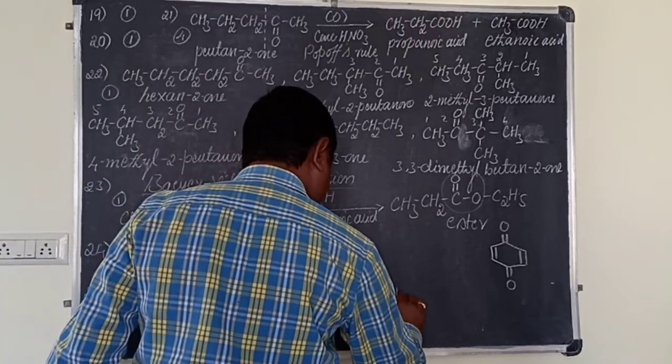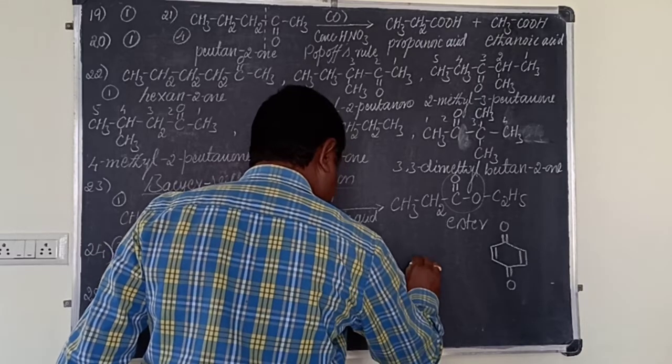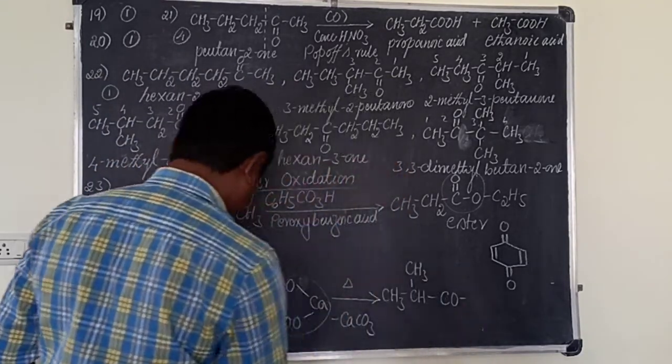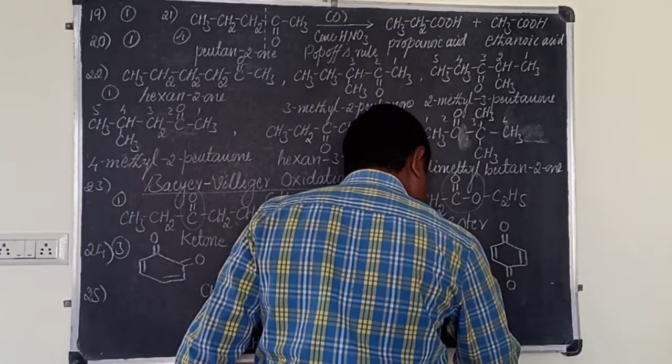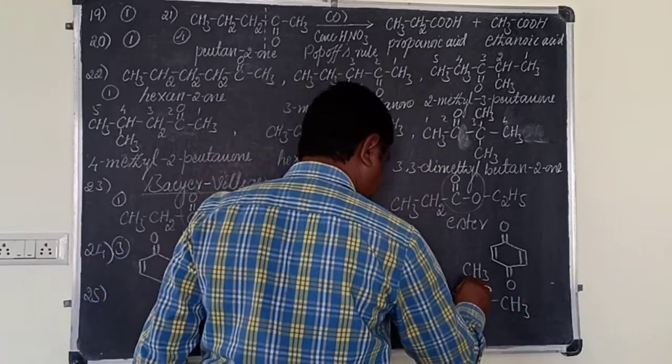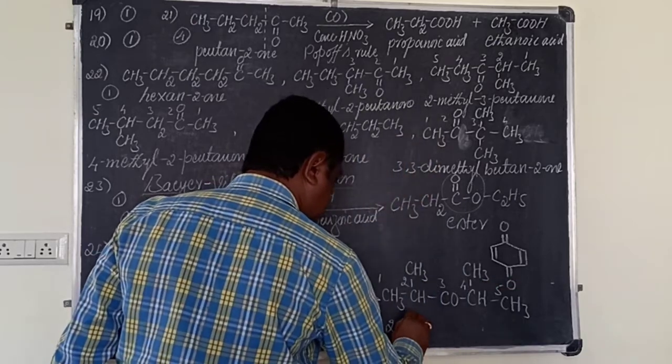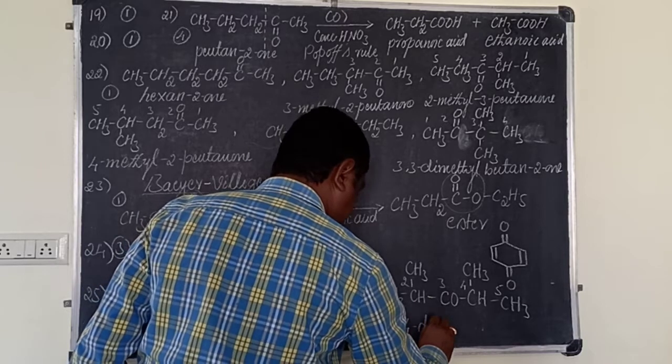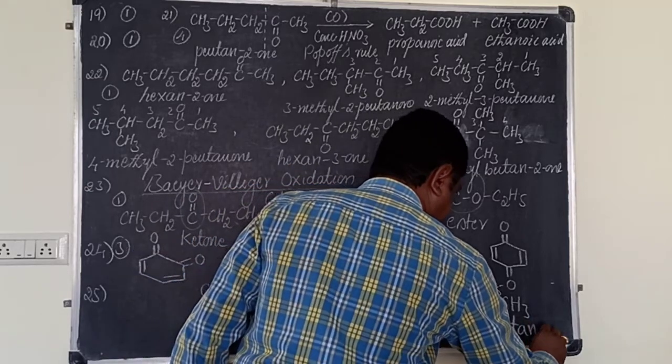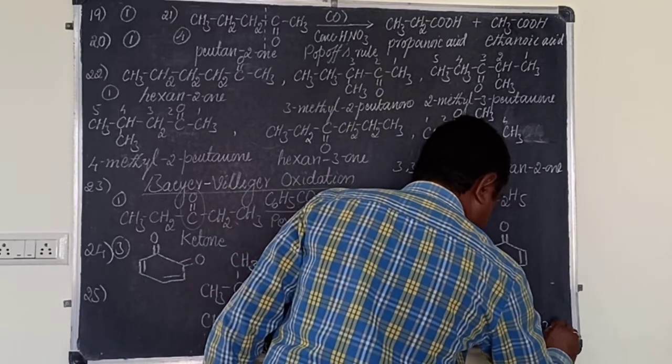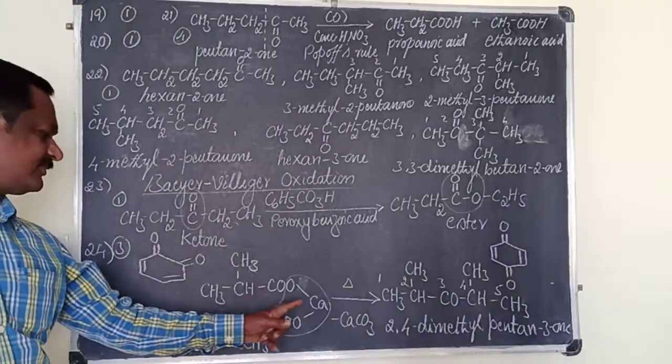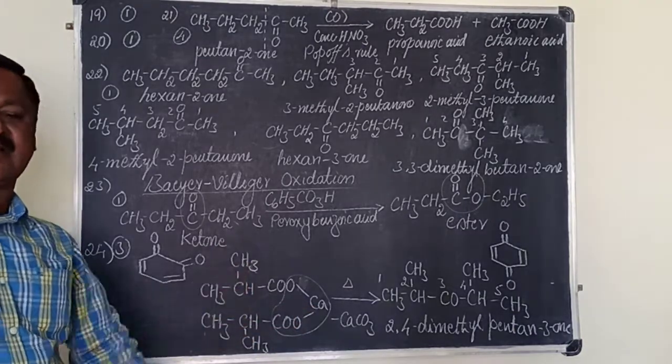CH3-CH(CH3)-CO-CH(CH3)-CH3. The ketone changes, what is the position of ketone? Three. 2,4-dimethylpentane-3-one. Isobutyric, calcium salts of isobutyric acid. The option is 2.